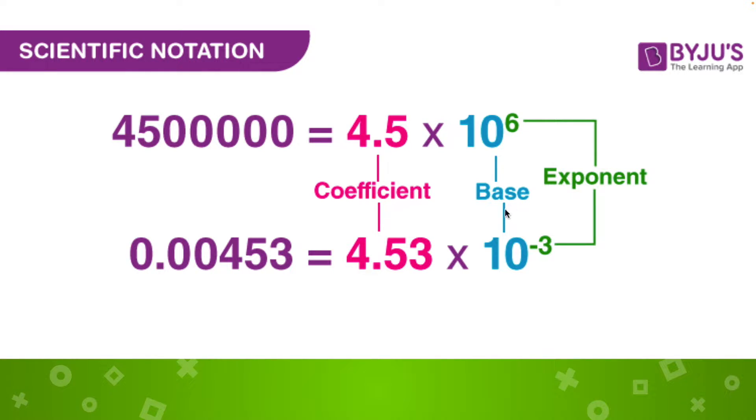Because it can't be 0 on the front, and it can't be 10. It can't be a two-digit number. It has to be a one-digit number. So we move the decimal place over until we get to that one essential number. That's called our coefficient.